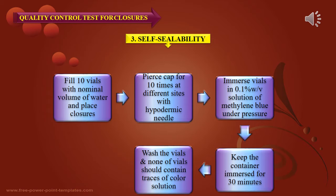For the self-sealability test, fill 10 vials with nominal volume of water and place closures. Pierce the cap 10 times at different sites with a hypodermic needle. Immerse vials in 0.1% w/v solution of methylene blue under pressure and keep immersed for 30 minutes. Wash the vials — no vials should contain traces of methylene blue color solution.